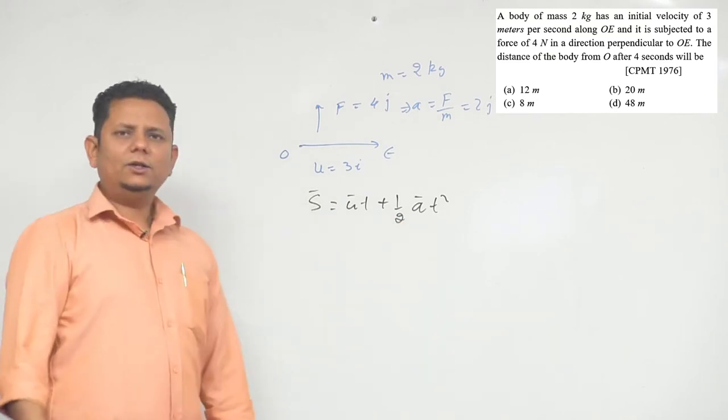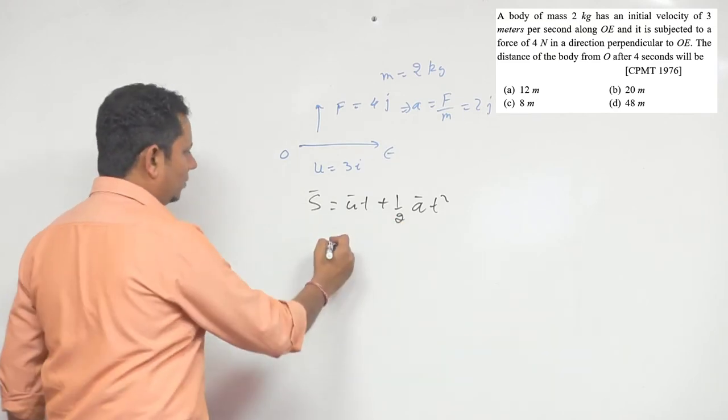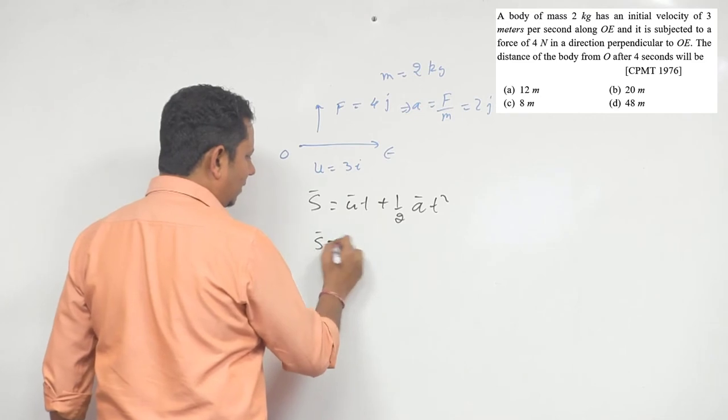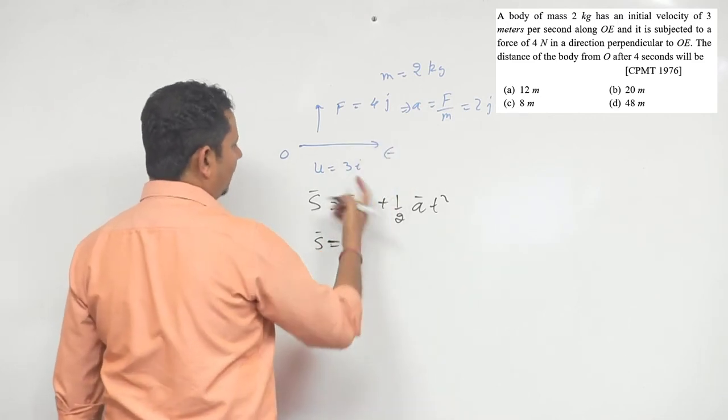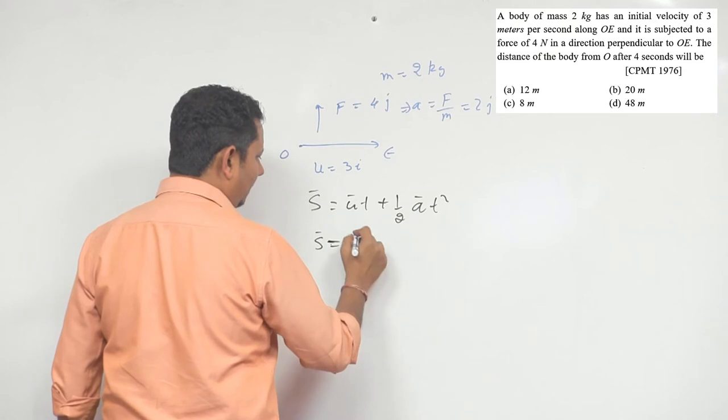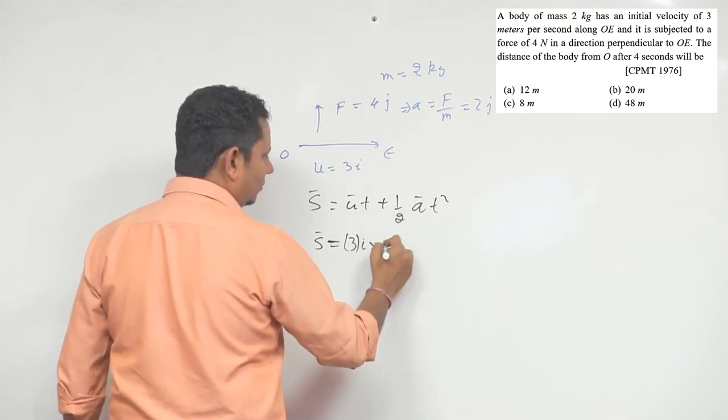So your s will be in vector form. u is 3i cap multiplied by time which is 4 seconds, plus half multiplied by acceleration is 2j cap multiplied by t, that is 4 squared.